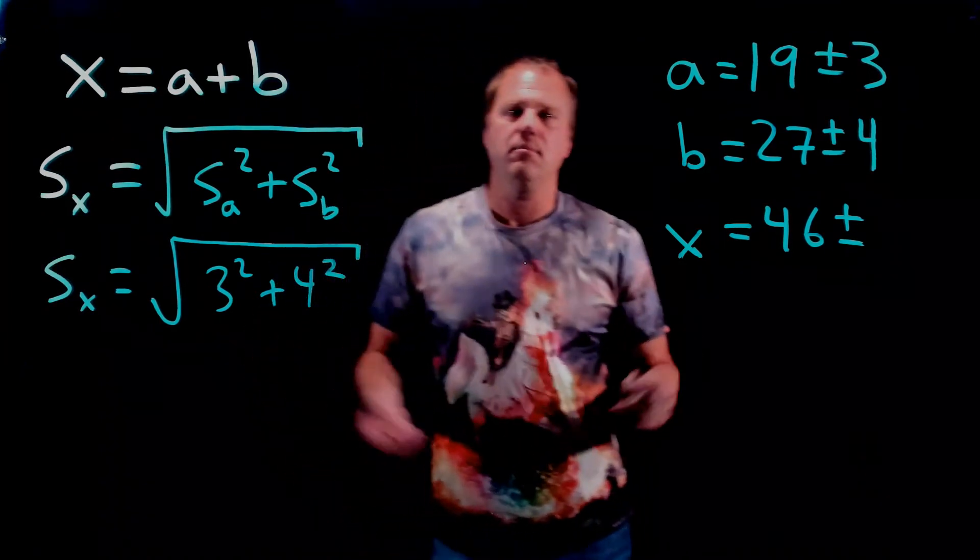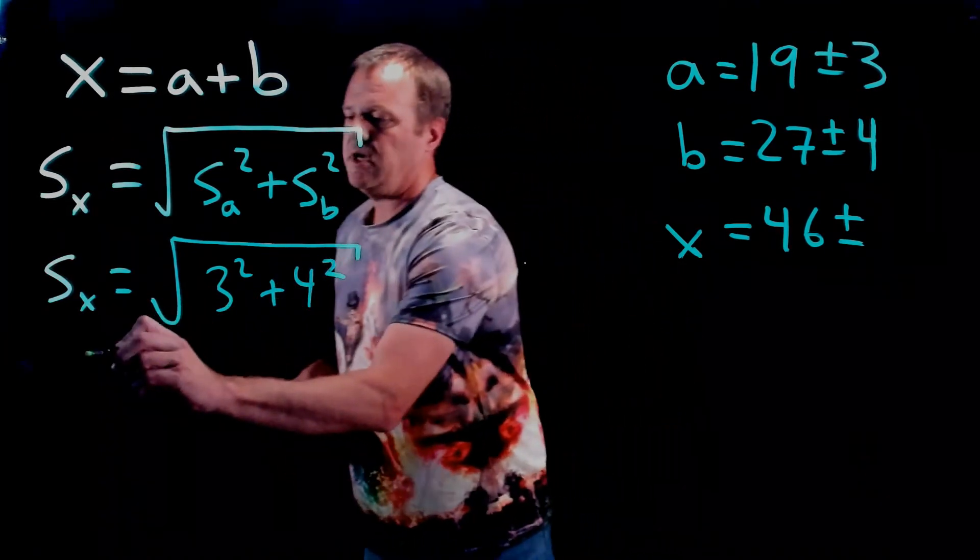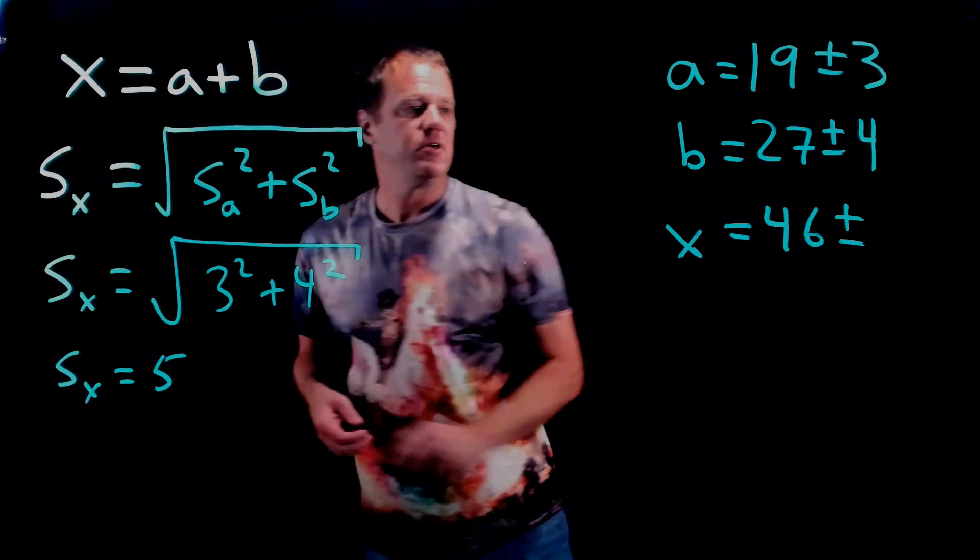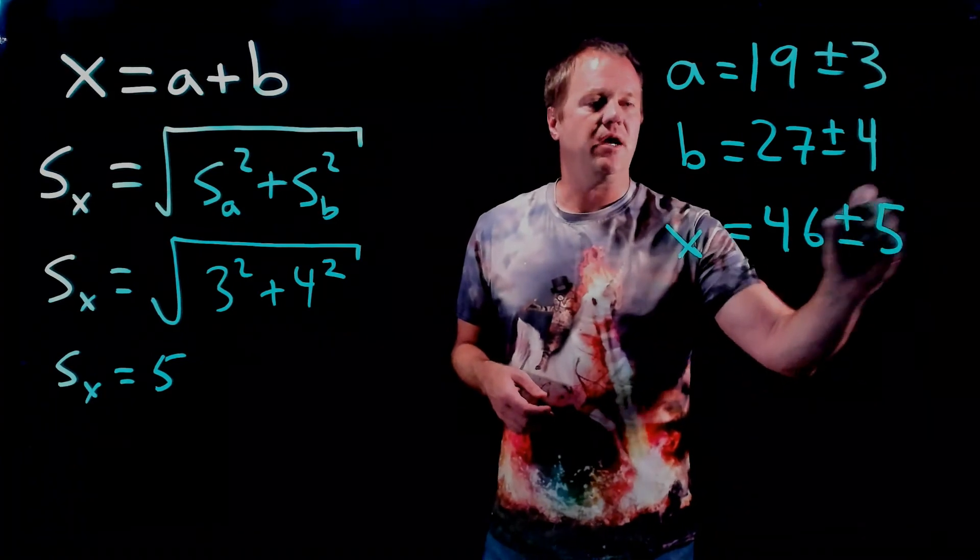I made up these numbers to make the math easy for me, so I can do this one in my head. It equals 5. That's the uncertainty in the calculated value.